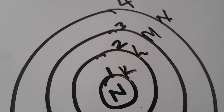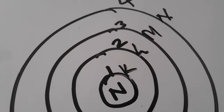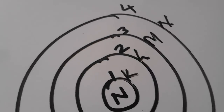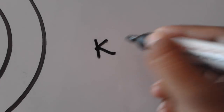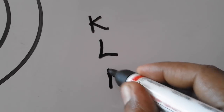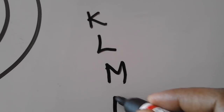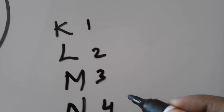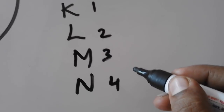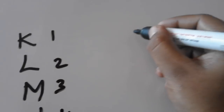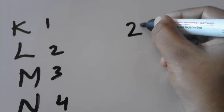In L shell, we have the shell. In K shell, it is called Ln. Then 1, 2, 3, 4. This equation is 2n².